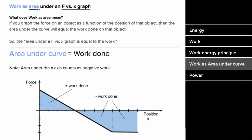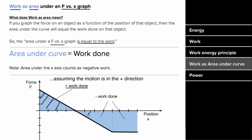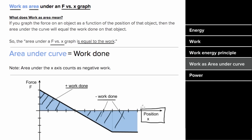If you get a force versus position graph, the area under that graph will represent the work done. So when you see F versus x, you should think: area equals work. But be careful — area above the x-axis counts as positive work done, and area underneath the x-axis counts as negative work done. Make sure the x-axis really is position; if you get a force versus time graph, the area is impulse, not work.